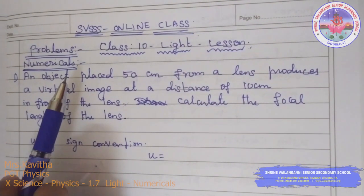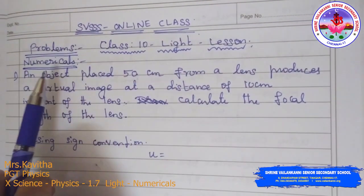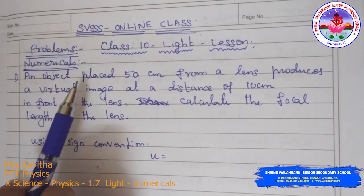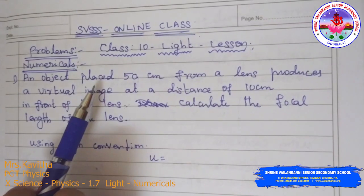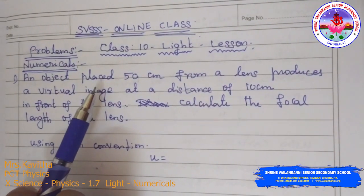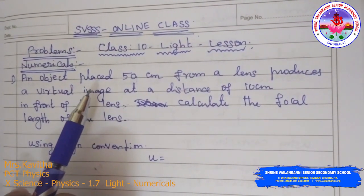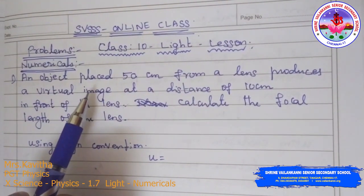Hello children. In this light lesson we are going to see numericals — mirrors, lenses, power, refractive index — different types of numericals we are going to see in the following sessions.